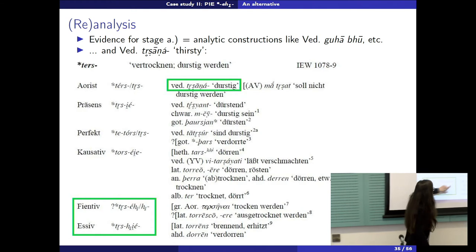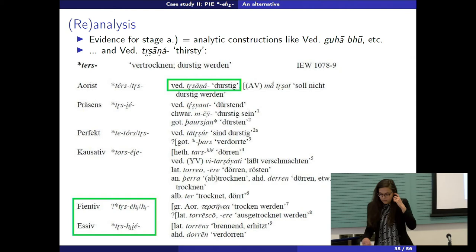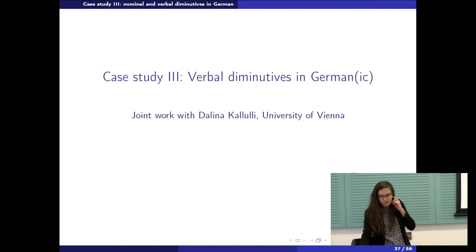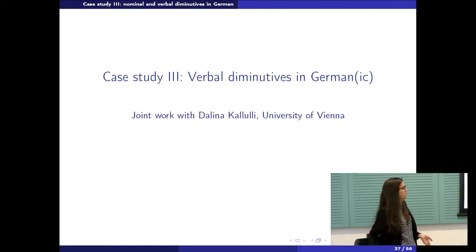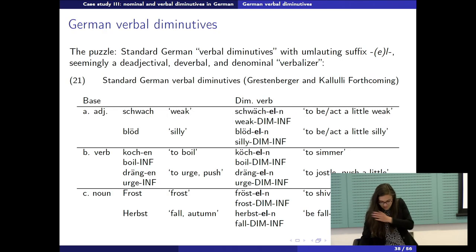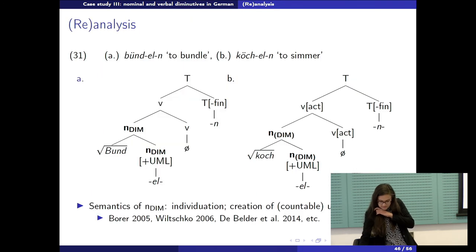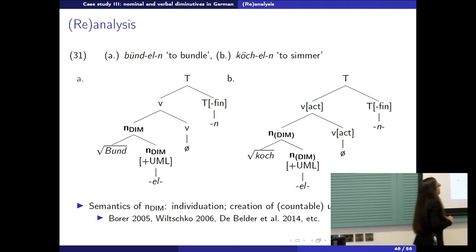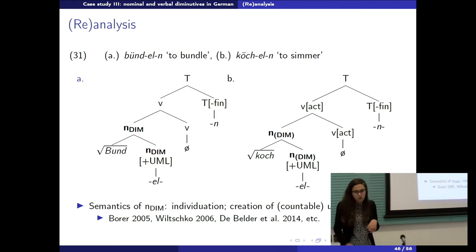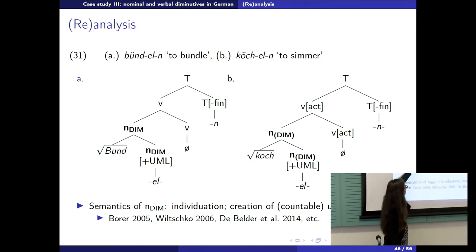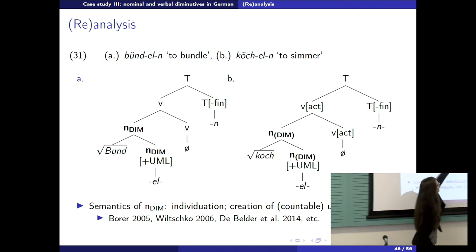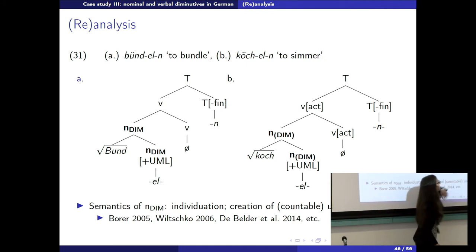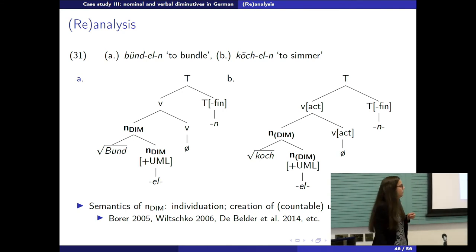I also wanted to talk about verbal diminutives in German and Germanic — the third case study, which is actually the most exciting one. Briefly: diminutive verbs in German are very productive, formed with an -l- suffix that seems to be the same as in nominal diminutives. The idea is that we originally form a nominal diminutive with the suffix and verbalize it with a verbal category-changing head. This feature then becomes reanalyzed as part of the verbal domain, and interestingly, diminutivity in the verbal domain seems to mean iterativity — these forms are pluractional iterative activity verbs.